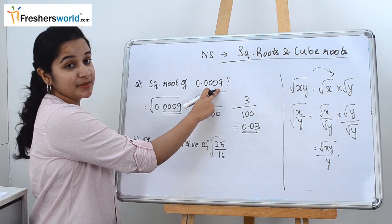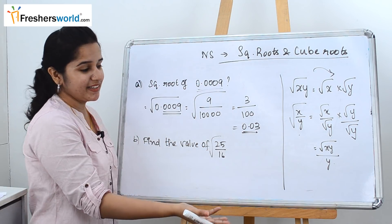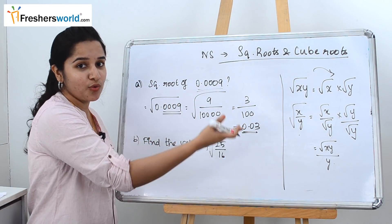So this can be simplified as this. If you know the square root very well, you can directly write it as 0.03. You don't have to do all these steps.